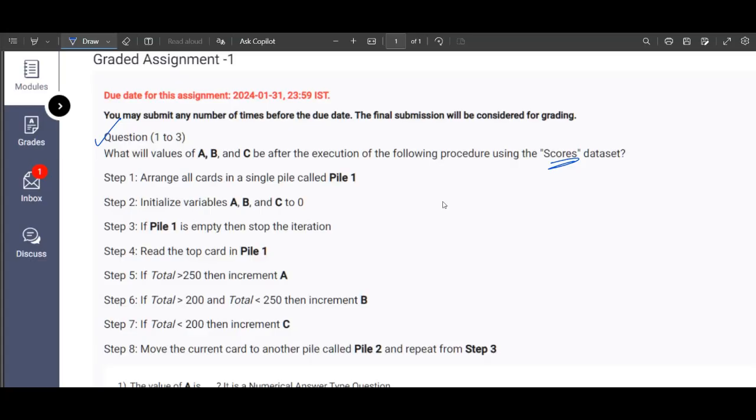This is a given pseudocode for this particular problem. Arrange all cards in a single pile called Pile 1. Initialize variables A, B, and C all to zeros. That is what is present in the second point. If Pile 1 is empty, all these are very basic steps.